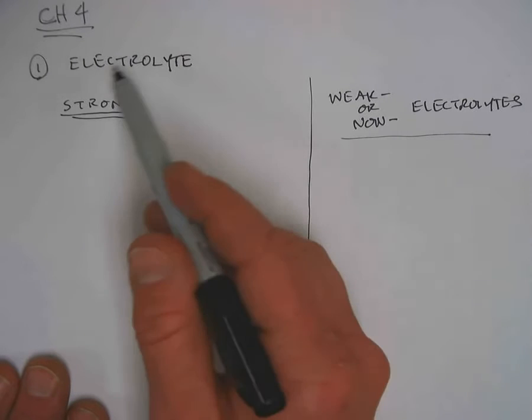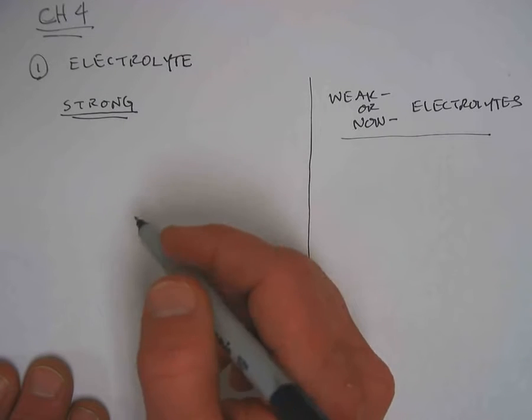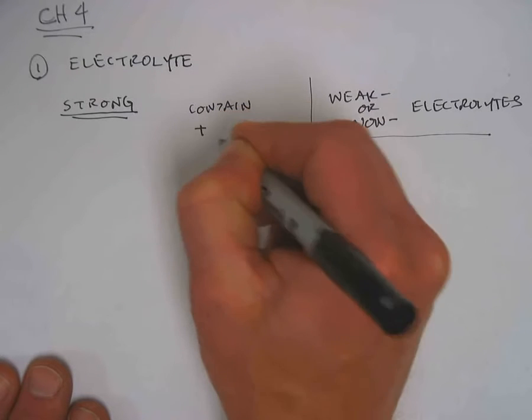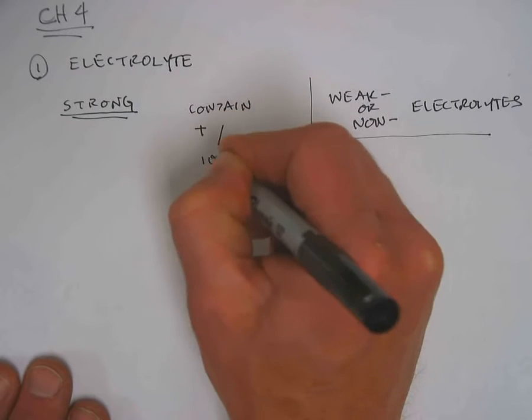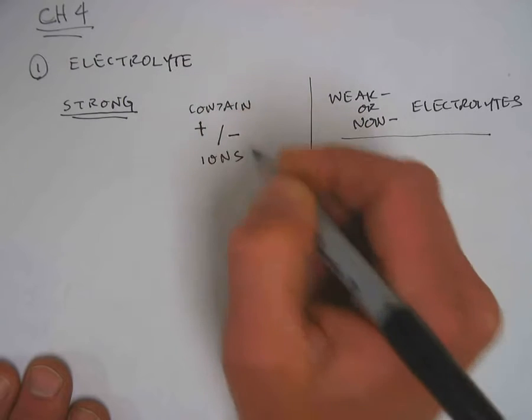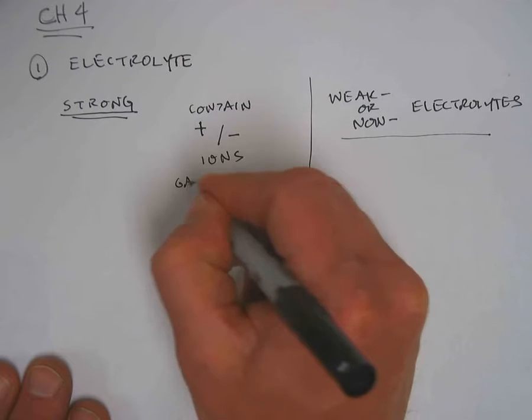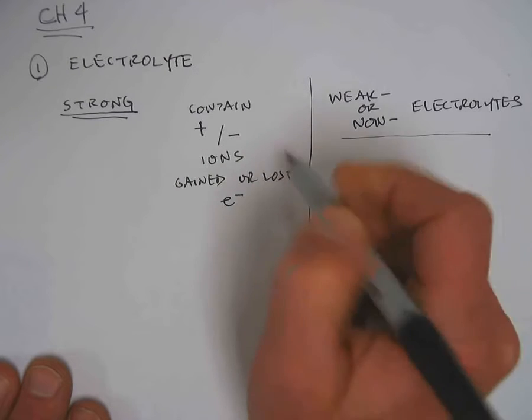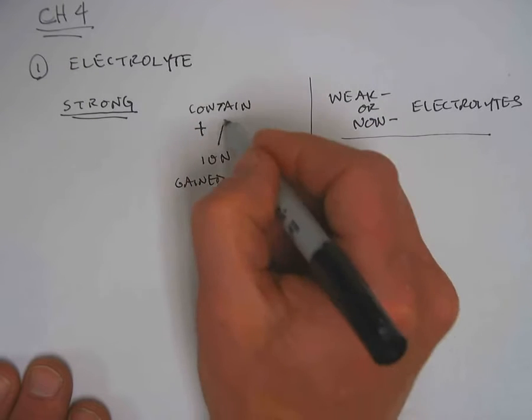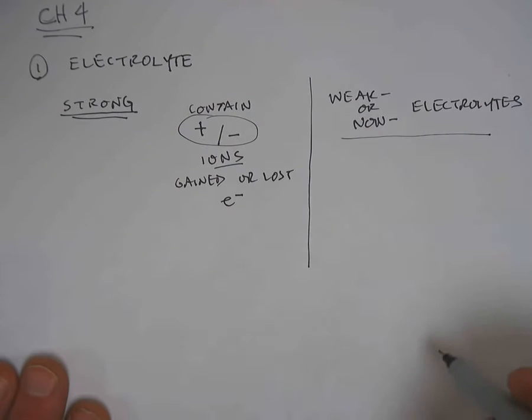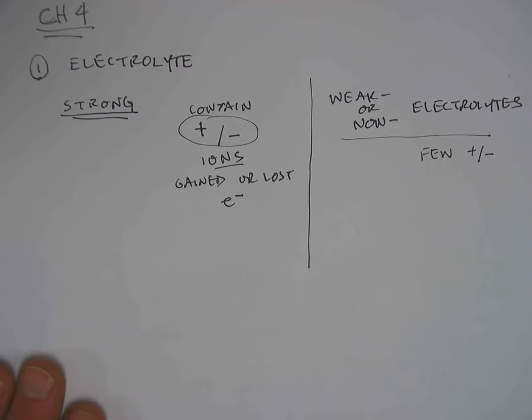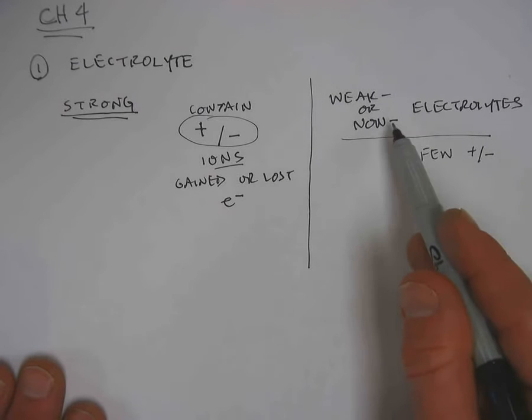These will be good conductors of electricity. And the things that are good conductors of electricity contain lots of positive and negative ions. These are charged things that have either gained or lost electrons. These guys contain few positive or negative charged things or none if they're a total non-electrolyte.